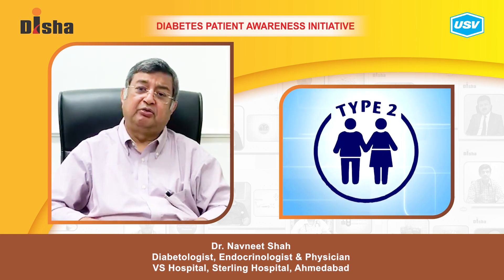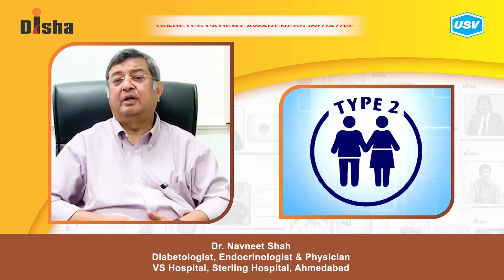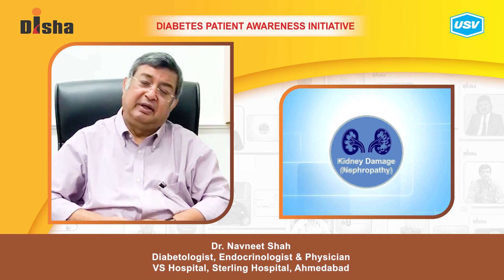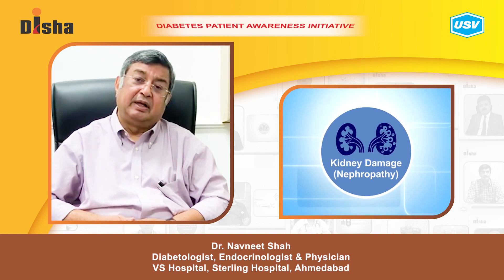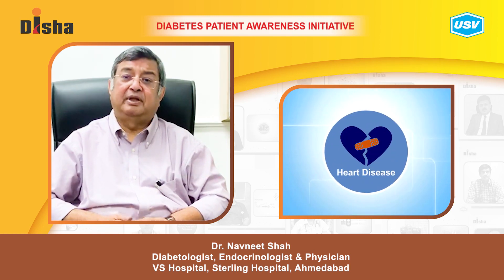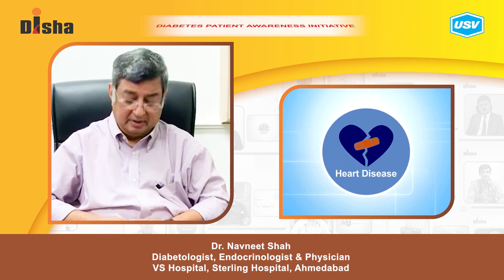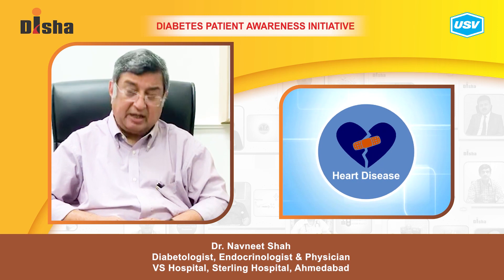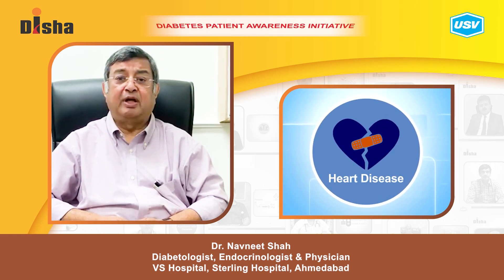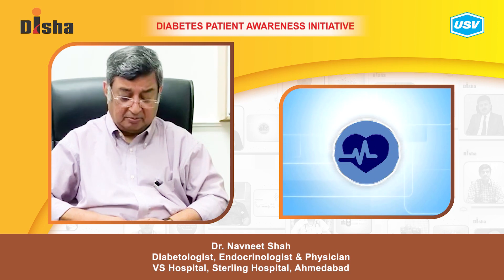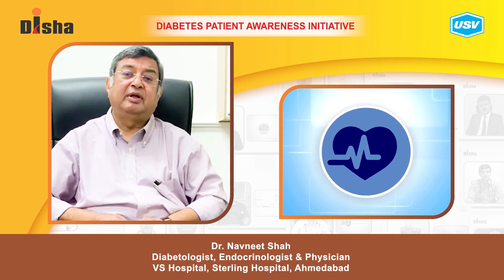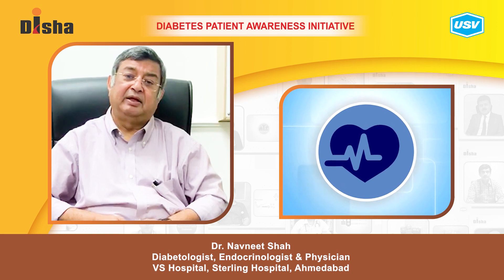We do a lipid profile every 3 to 6 months and a complete checkup once a year, including eyes, kidneys, early detection of microalbuminuria, and heart problems in type 2 diabetes. Cardiovascular risk modification is very important in type 2 diabetes because cardiovascular problems are very dangerous and can sometimes be fatal.